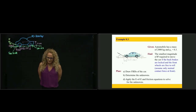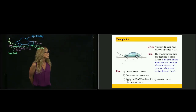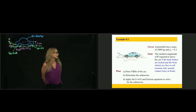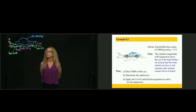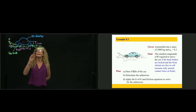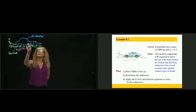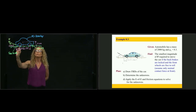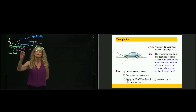This is problem 8.3, and we are asked to find the smallest required force F to move the car. The brakes are on wheel B, and wheel A is free to roll — they are inferring that wheel A does not have any friction.